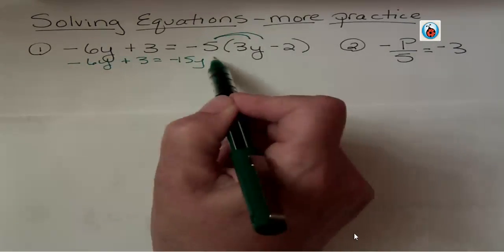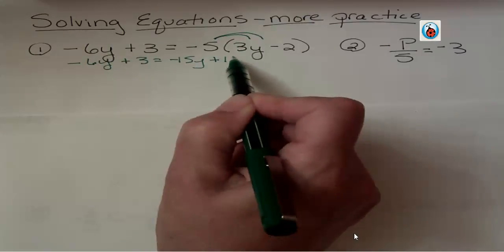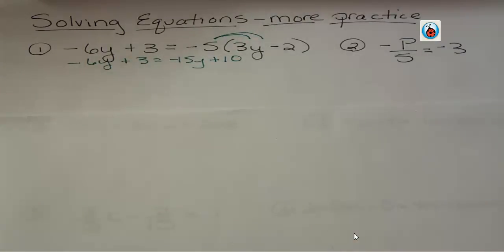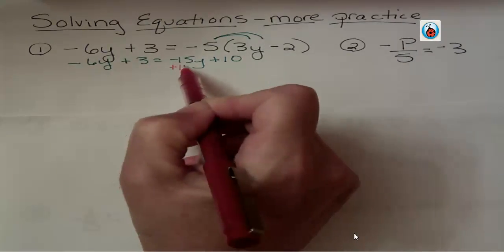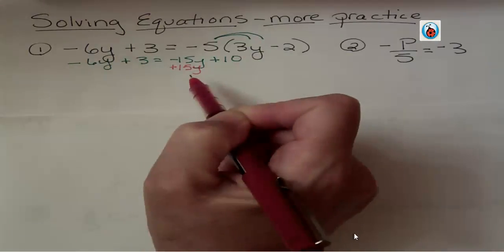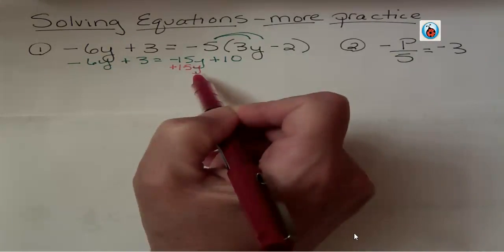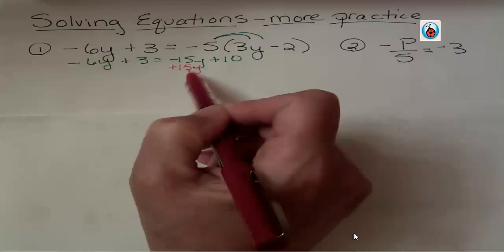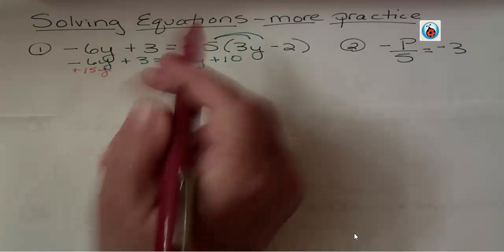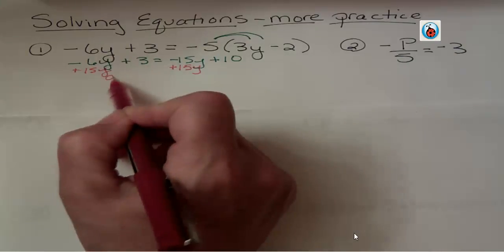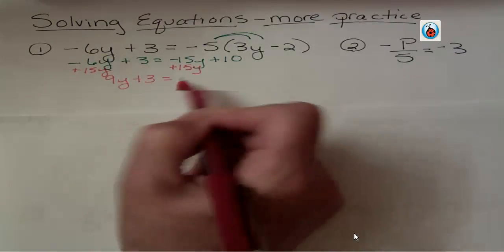Remember negative negative looks like subtraction, could be subtraction or negative sign. It's going to have the same effect. Now I want to move the y's to one side, the variable terms to one side, and constant terms to the opposite side. I'm using the addition property of equality. Negative 15y and positive 15y are additive inverses. They cancel to 0. Over here, negative 6 and positive 15 is 9y. I still have plus 3, and over here I have plus 10.